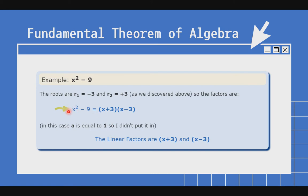In this case, a is equal to 1 — walang leading coefficient na ibang numero. 1 lang ang leading coefficient ng ating x squared, so hindi na natin siningit ang 1 dito sa ating factors.